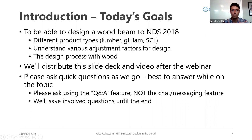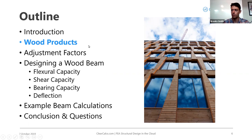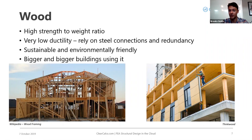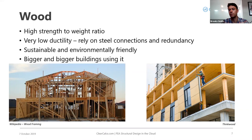Wood in general has features that make it very appealing to engineers, especially in North America. The biggest advantage is its high strength-to-weight ratio — wood is really light, so someone can walk with a plank on a construction site easily. The biggest drawback is its lack of ductility. To address this, we use steel or metal connections and a lot of redundancy to allow for some ductility and avoid purely brittle failure modes.